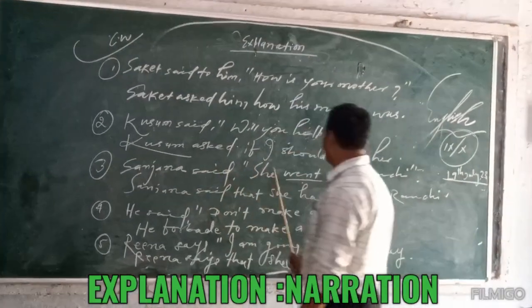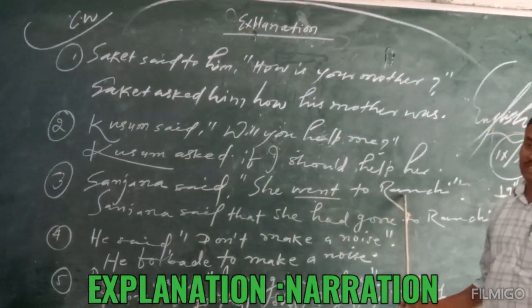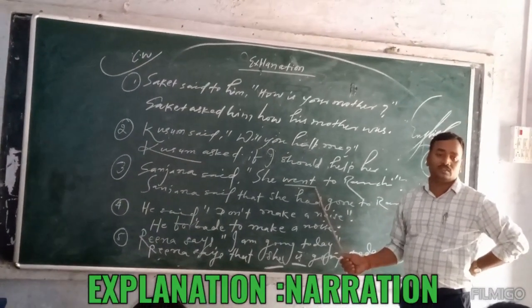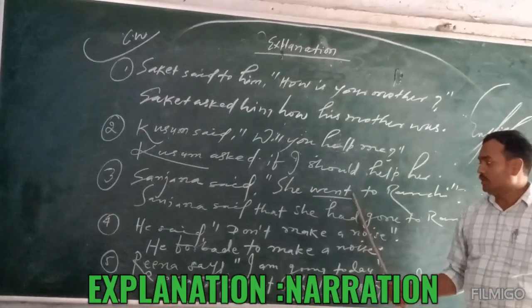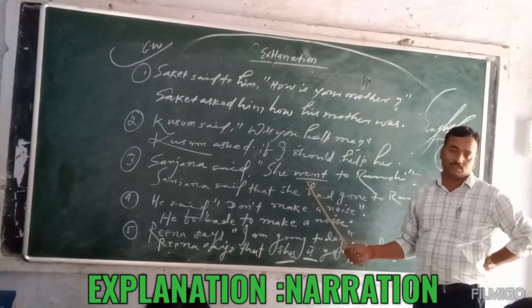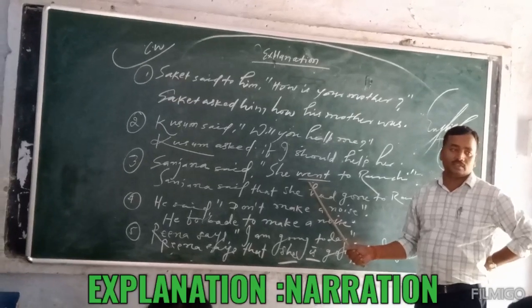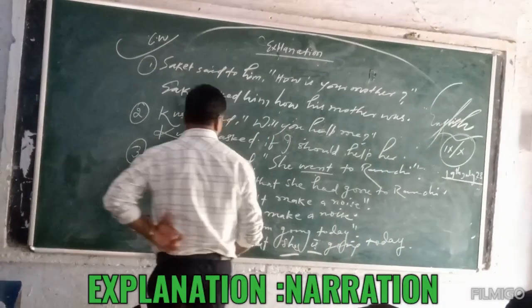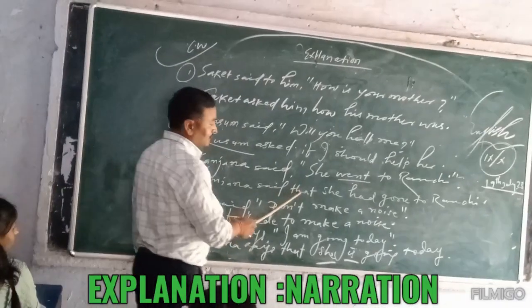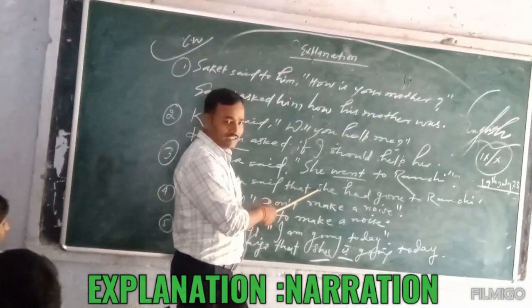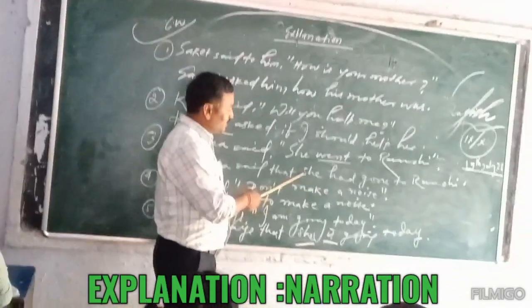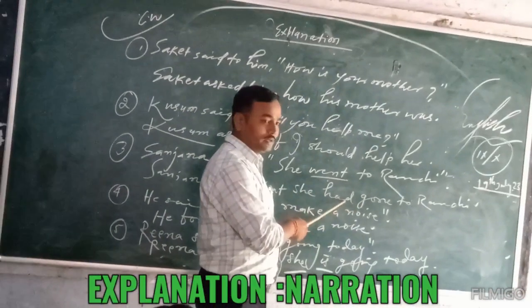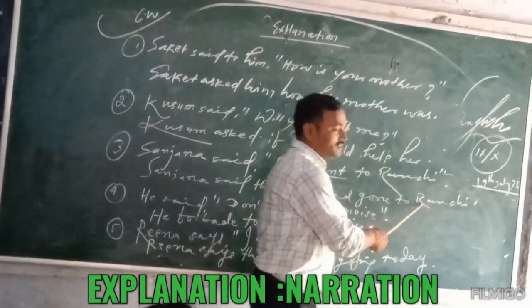Next one: Sanjana said, 'Sir went to Ranchi.' At first, we have to analyze — the sentence belongs to simple past tense. Already you know that V2 changes into had plus V3, meaning simple past tense changes into past perfect tense. Now, Sanjana 'said' — third person, no change. When V2 is simple past tense, it changes into past perfect tense, so the result is: Sanjana said that Sir had gone to Ranchi. This is the right sentence.